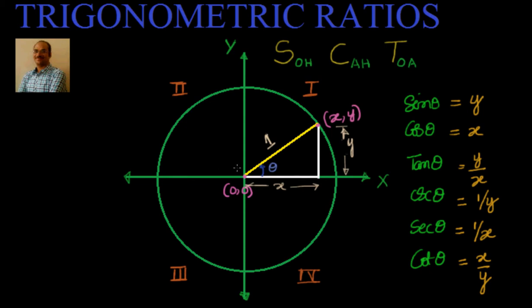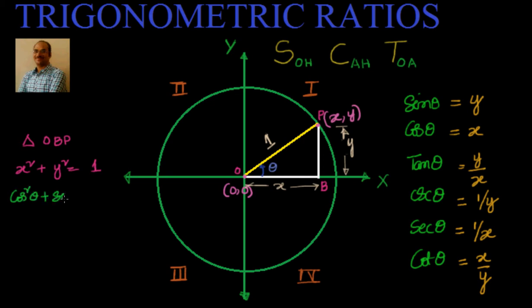For this triangle, let us say this is O, this is point P, and this is point B. If we apply the Pythagorean theorem to triangle OPB, we know that x squared plus y squared equals 1. But since x equals cos theta and y equals sin theta, I can say directly that cos squared theta plus sin squared theta equals 1.